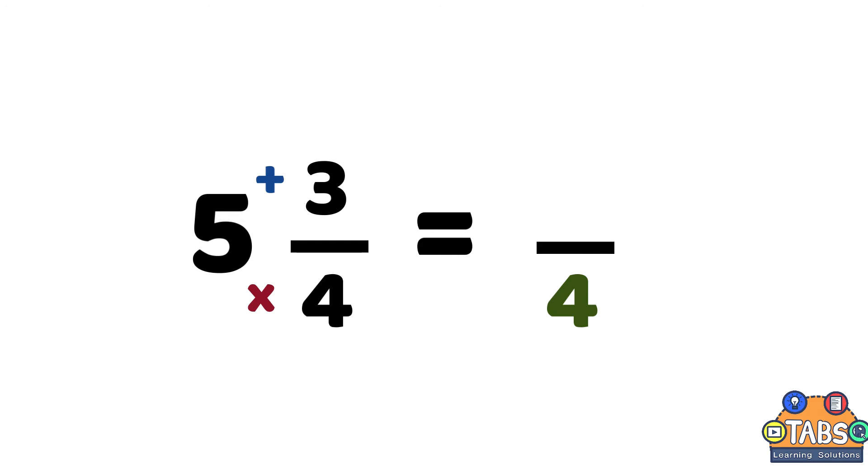Then multiply the whole number with the denominator: 5 times 4 equals 20. Then add the numerator, which is 3. This equals 23. Therefore, the improper fraction is 23/4.